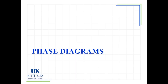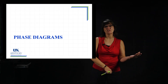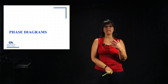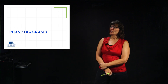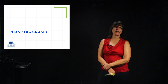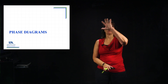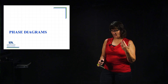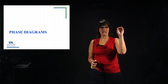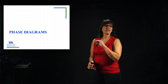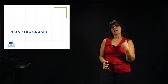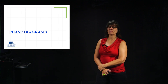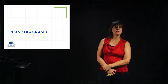Throughout this chapter we've been looking at phase changes and the conditions of temperature and pressure that lead to various phase changes. We're going to look at what are called phase diagrams. Phase diagrams are a summary of all the conditions that lead to a substance's solid state, liquid state, and vapor or gas state. We'll look at a couple of different substances — each substance has its own unique phase diagram.